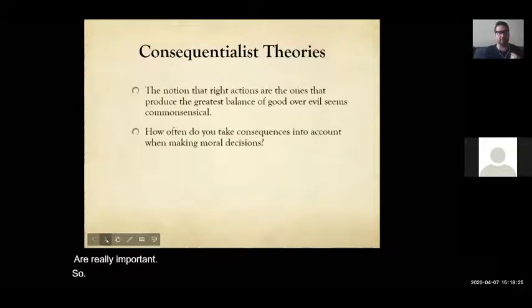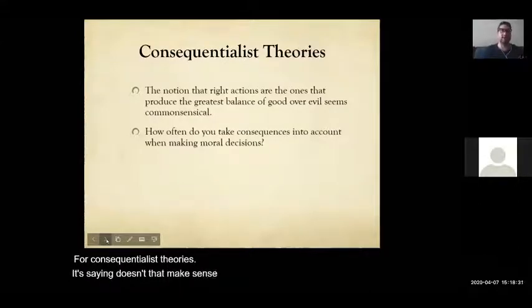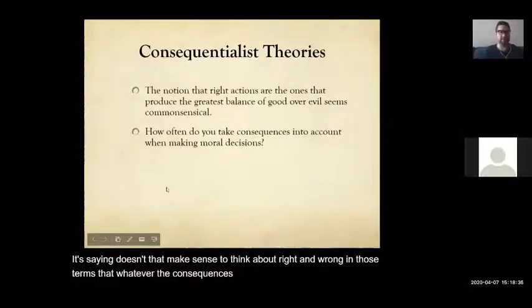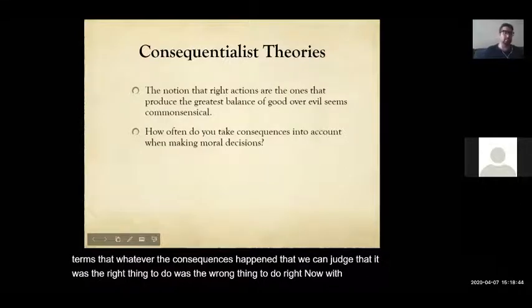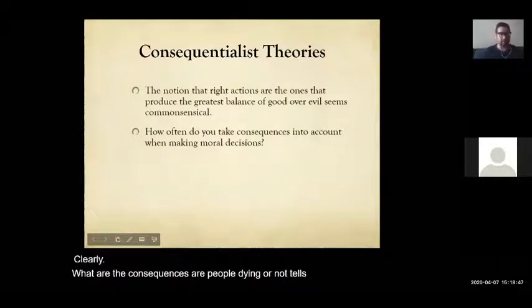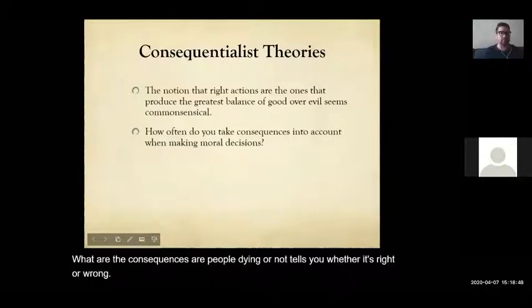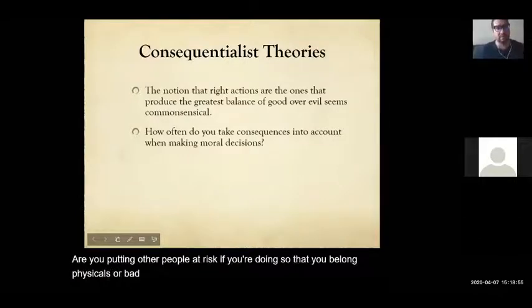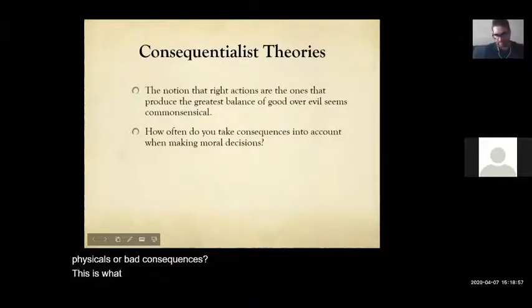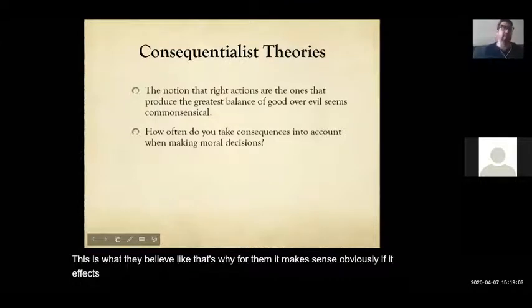For consequentialist theories, doesn't it make sense to think about right and wrong in terms of consequences? Whatever the consequences happen to be, we can judge whether it was the right or wrong thing to do. Like right now with the virus — what are the consequences? Are people dying or not? That tells you whether it's right or wrong. Are you putting other people at risk? If so, that could be something wrong because those are bad consequences.